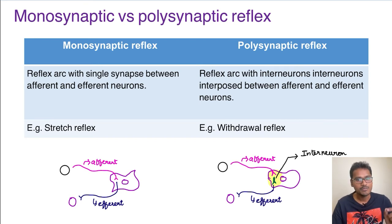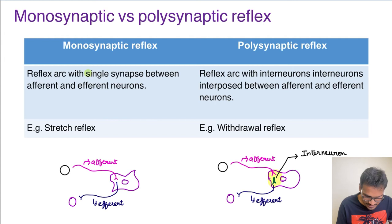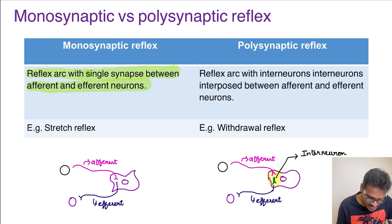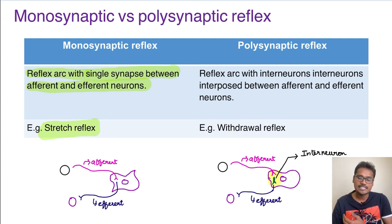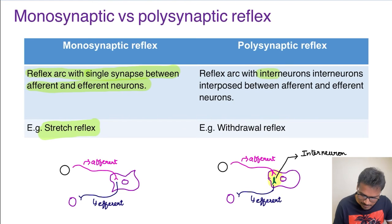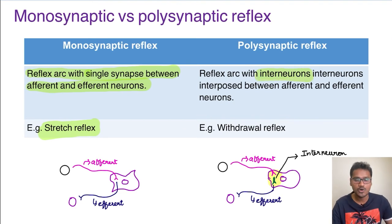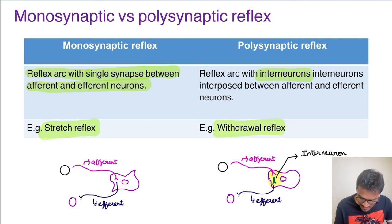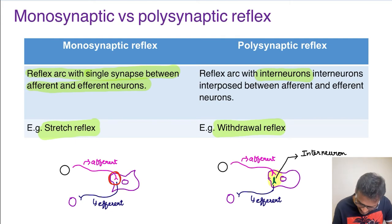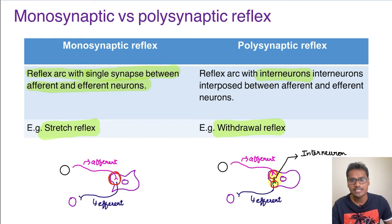A monosynaptic reflex has only one synapse between the afferent and efferent neurons. The example is the stretch reflex — including deep tendon reflexes like biceps, triceps, knee jerk, and ankle jerk. Whenever there are multiple interneurons, the synapses can number from two up to a hundred — these are polysynaptic reflexes, and the classical example is the withdrawal reflex. In the monosynaptic diagram there is only one synapse between afferent and efferent, while in polysynaptic there is an interneuron making two or more synapses.